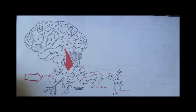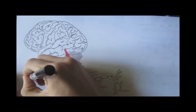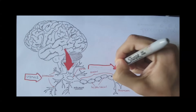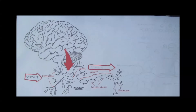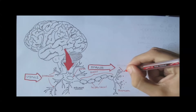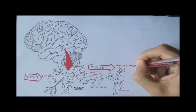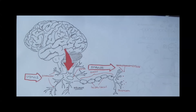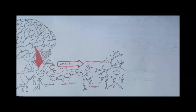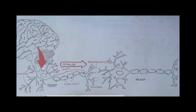A message or signal from the brain or from somewhere else begins when the dendrites receive a stimulus, which then travels down the axon towards the terminal. Once at the terminal, the neuron will release chemicals called neurotransmitters, which will then pass on the signal to another tissue, or in this case another neuron.